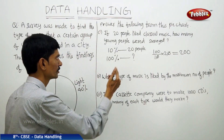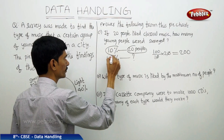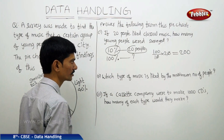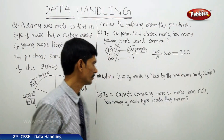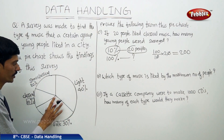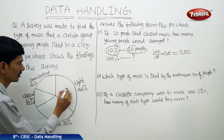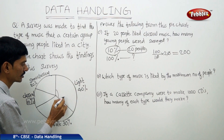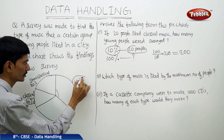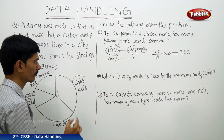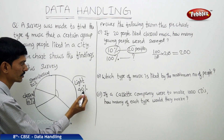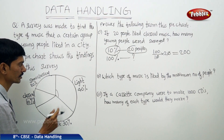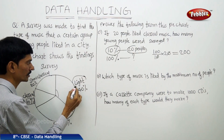Which type of music is liked by the maximum number of people? By observing the pie chart, the sector representing light music is the largest. Light music is liked by the maximum number of people at 40%, while the others are 30%, 20%, and 10% — all less than 40%.